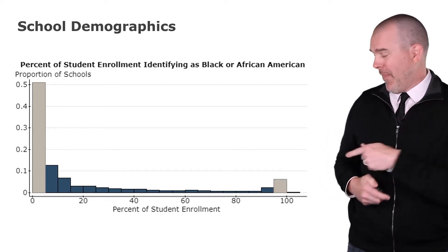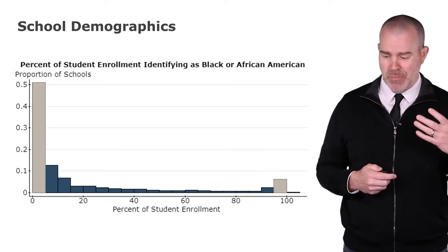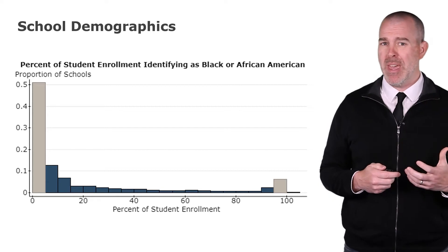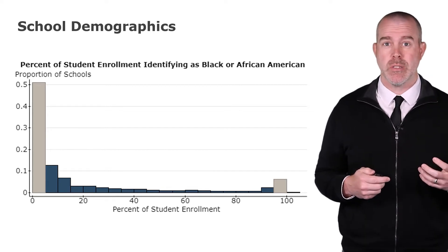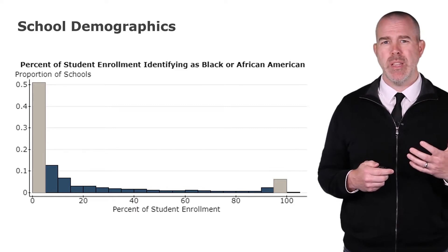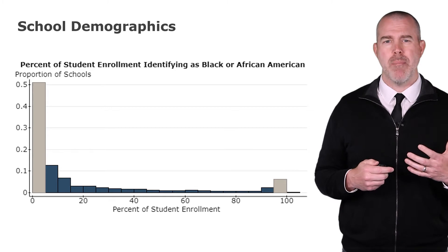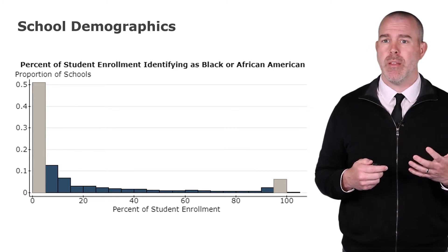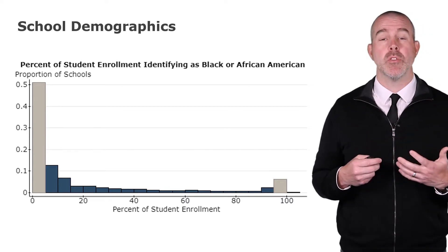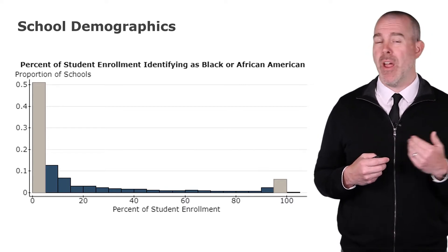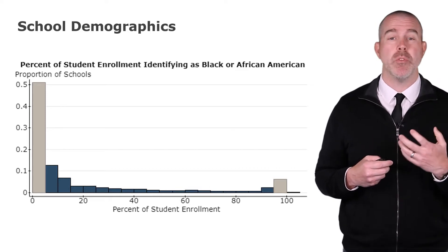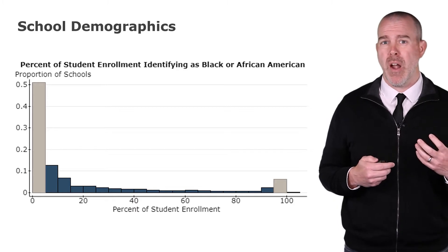But then there's a little peak over on the right — about 7 or 8 percent of schools have another big peak where almost all of their students identify as Black or African-American. This points to something really interesting about Illinois, and a lot of America as well: we are very segregated. The majority of schools have very few Black or African-American students, and then there are a few schools where students are almost entirely Black or African-American.